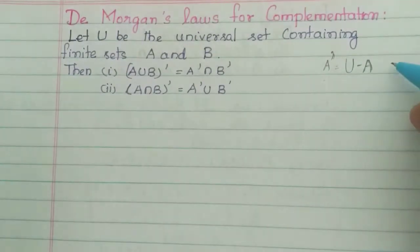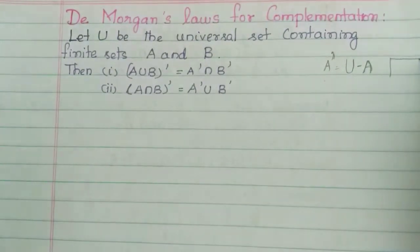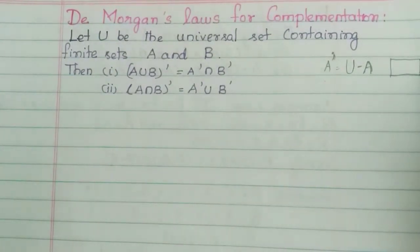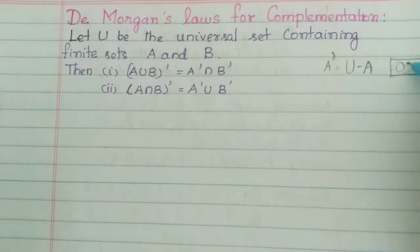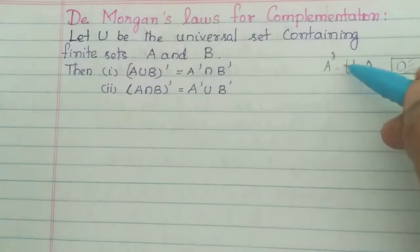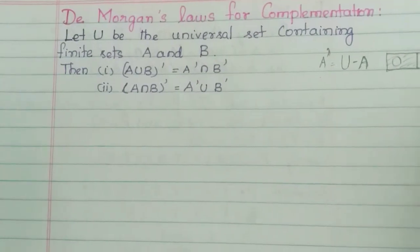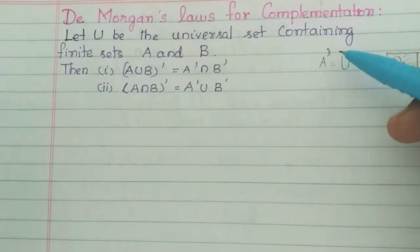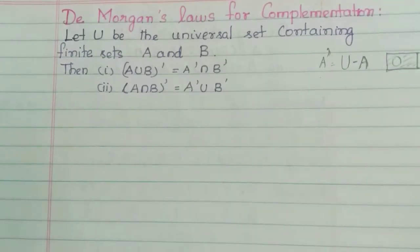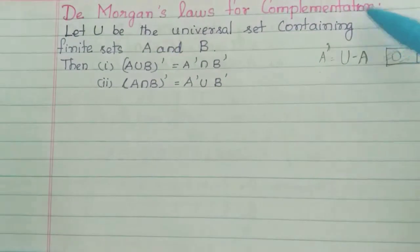If the complementation is like the one in the diagram, we will see the union. You can remove the A dash. So this is A dash. When we are talking about this, complementation is very easy. We have to remove the universe from here. Okay, now De Morgan's Law for Complementation.